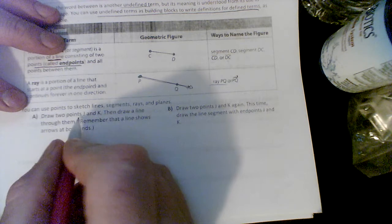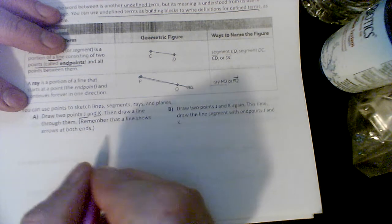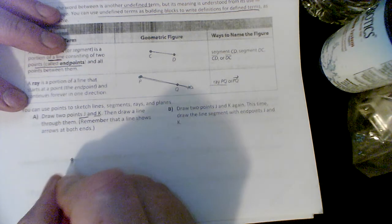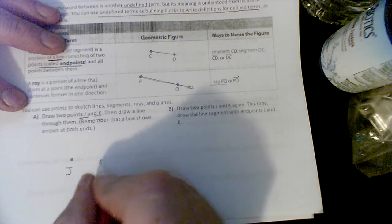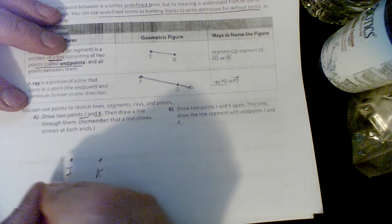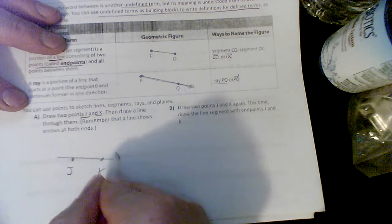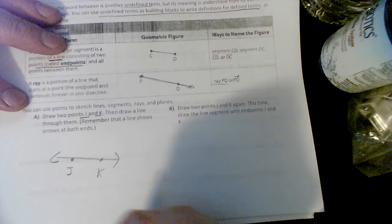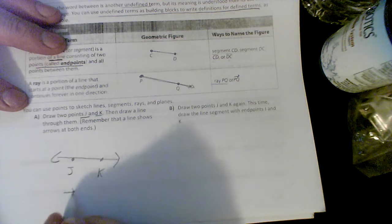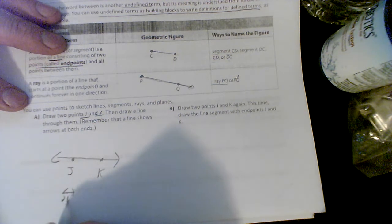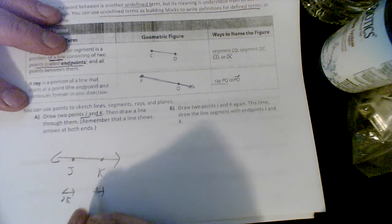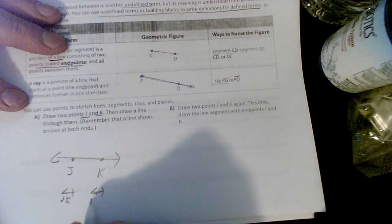You can use points and line segments to draw. Let's do it: draw two points J and K, then draw a line through them. So draw point J and draw point K, and we're going to draw a line. We're going to go in both directions. Let's name it—we're going to name it line JK or I could say line KJ, it doesn't matter the order.